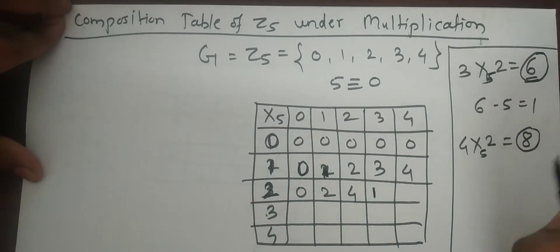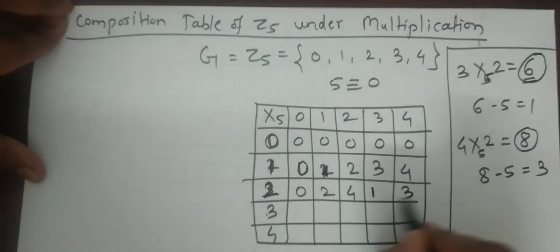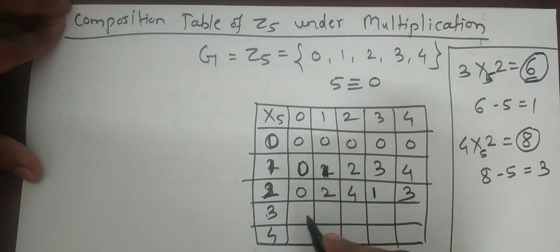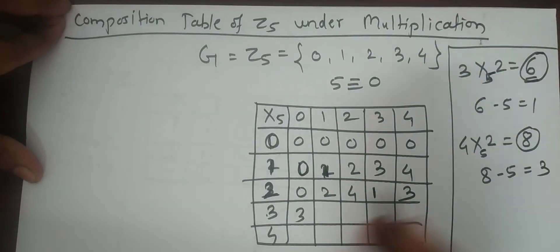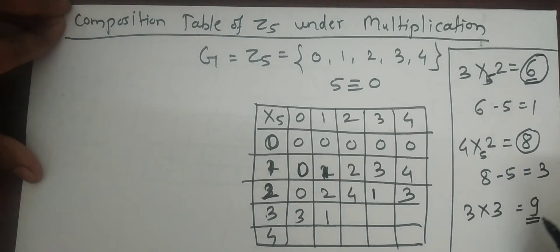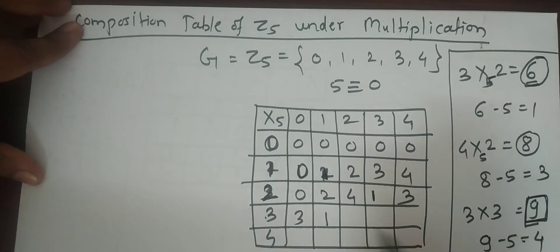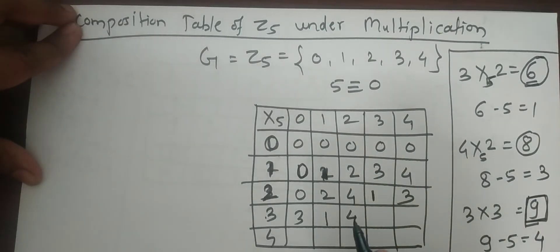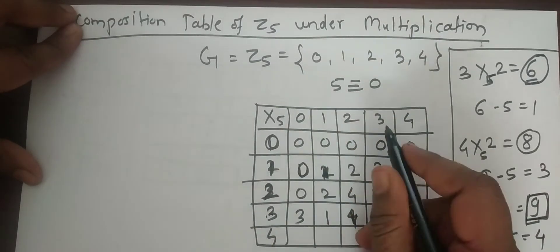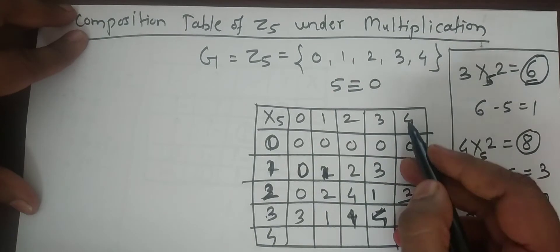Continuing: 1×3=3, 3×2=6 so remainder is 1, 3×3=9 so remainder is 4. For 4×3: 4×3=12, the nearest multiple of 5 is 10, so 12 minus 10 is 2. Write 2 here.